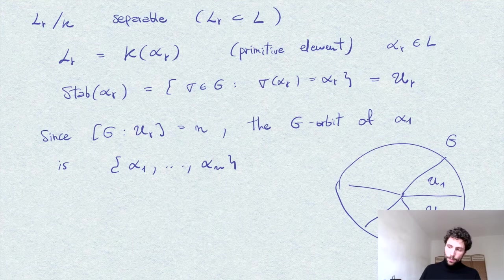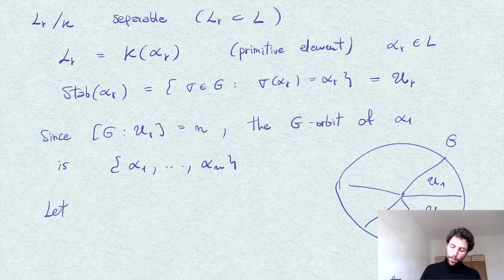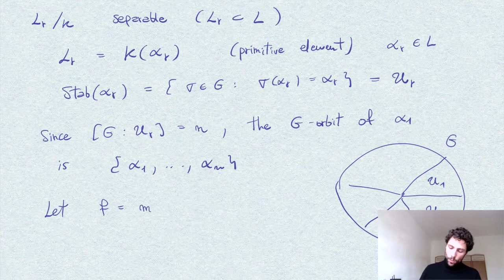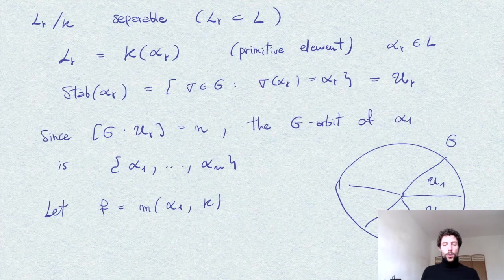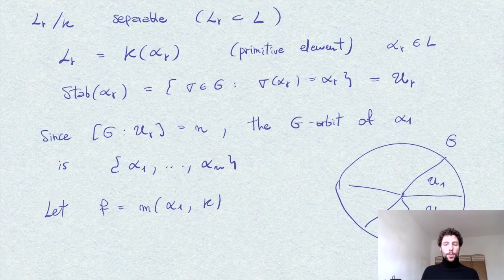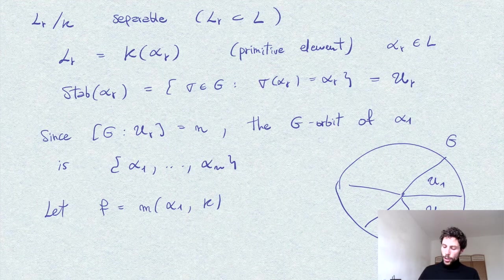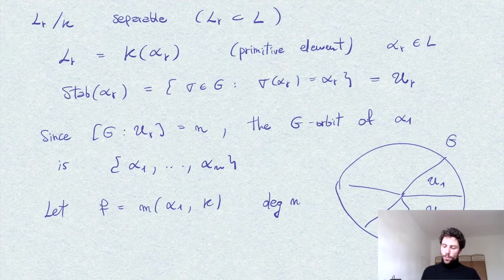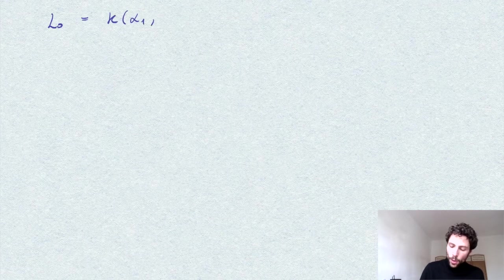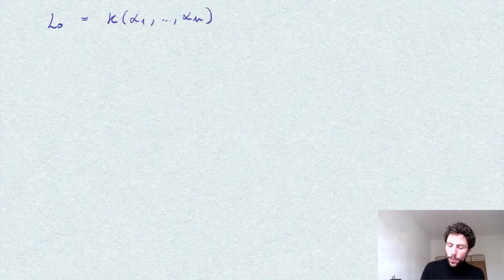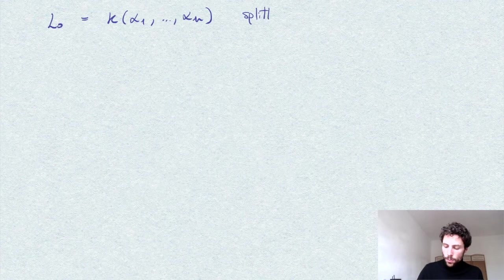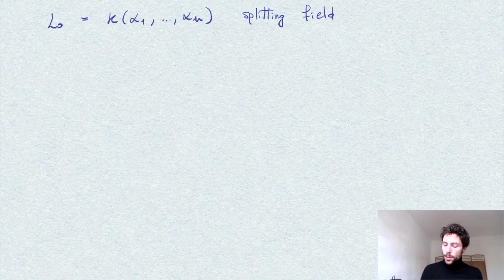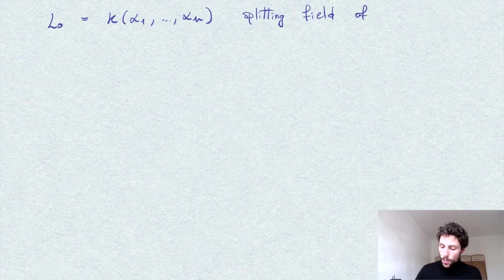So if we consider the minimum polynomial of alpha_1, say over K, so what we have is that this is of course irreducible with these n simple roots, so a polynomial of degree n. So the splitting field of F is precisely the field extended by all these roots. K of alpha_1 through alpha_n is a splitting field by construction of F over K.